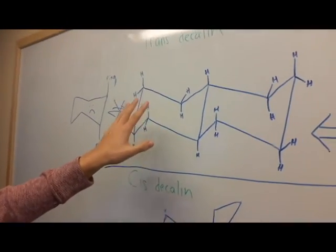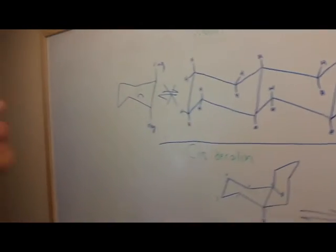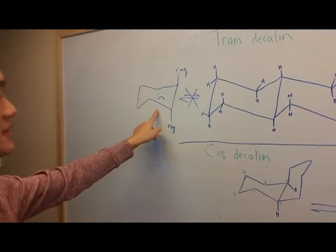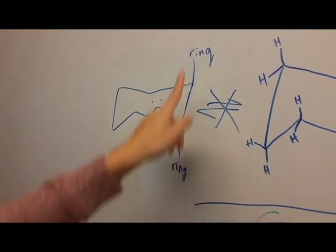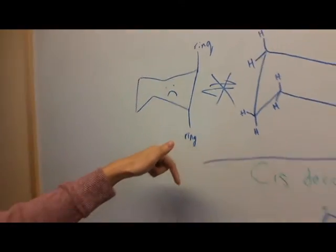One thing to mention about trans-Decalin, however, is that it cannot undergo chair interconversion. As you can see, if you were to try to do that, the angular strain would be so great that the rings would be pointing in completely opposite directions.